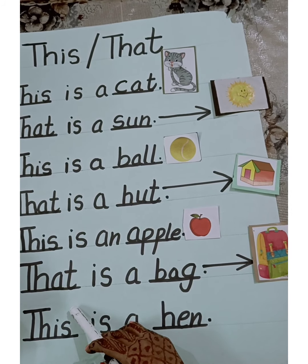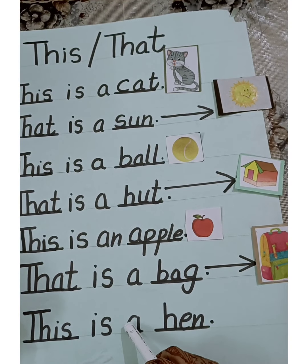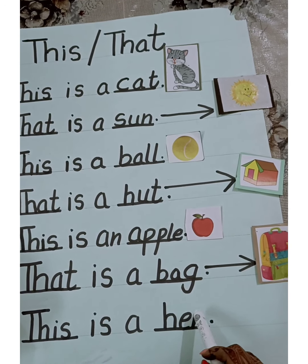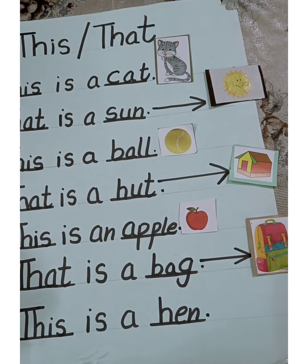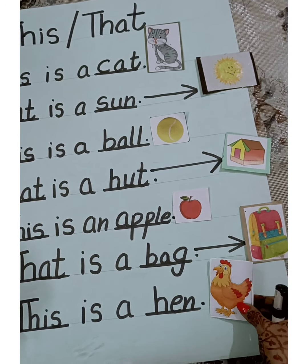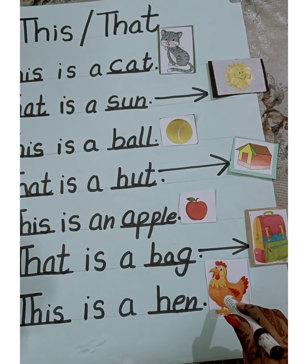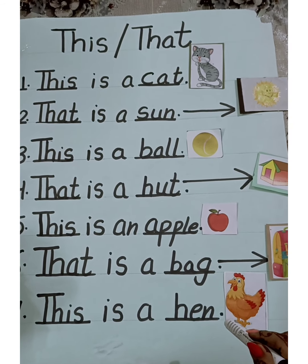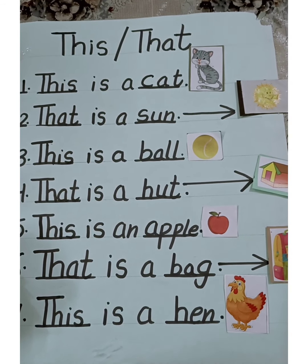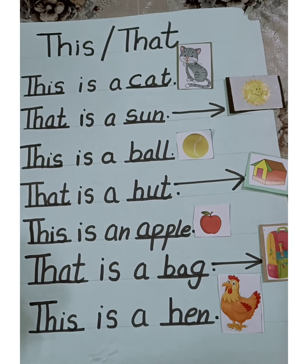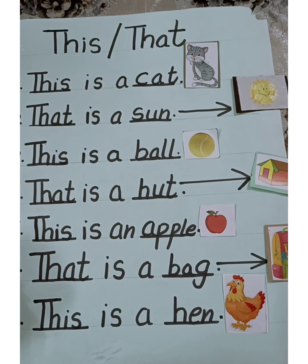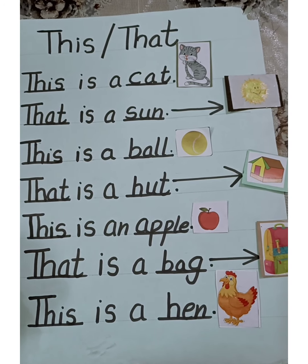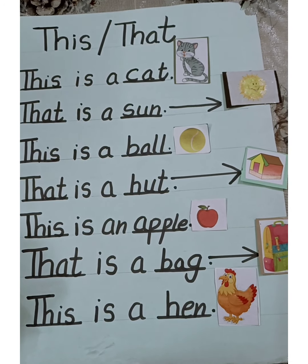Next is: this is a hen. This hen is near to us, so we will use: this is a hen. Students, I hope I have made the concept clear. Thank you. Have a nice day.